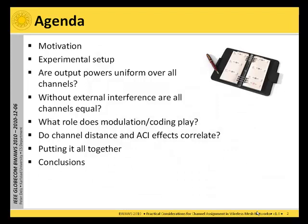The talk is outlined as follows. I will motivate the topic, give some description of the experimental setup we used, and then ask and answer the following questions: Are the output powers uniform over all channels? Without external interference, are all channels equal? What role does modulation and coding play? Do channel distance and ACI effects correlate with each other? And what happens if we put it all together? I will conclude the talk with a few recommendations for designing channel assignment algorithms.